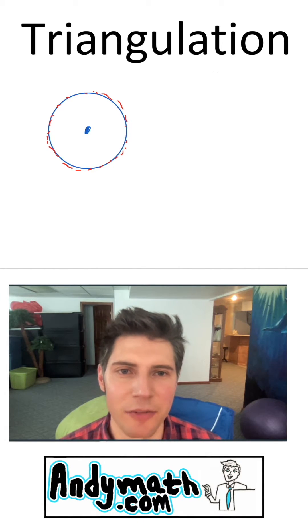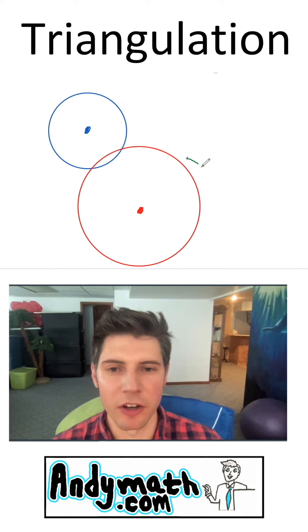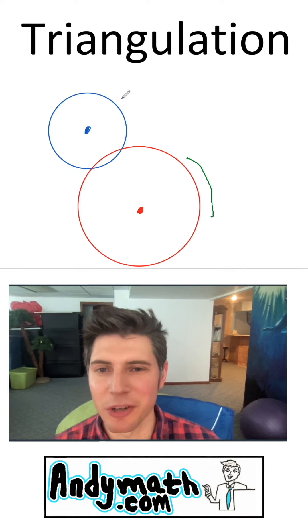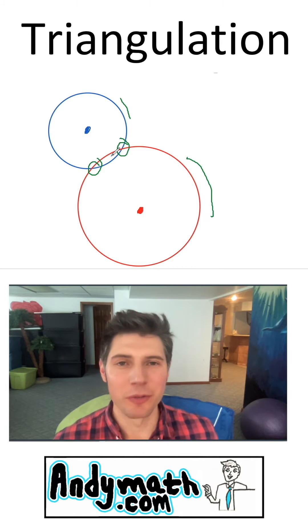So we'll use a second cell phone tower and now we know that it's say 2.4 miles from that tower. So now we know it's somewhere along this circle but since we already knew it was somewhere along this circle we've now narrowed it down to these two spots. That's pretty exciting. We know it's one of two spots.